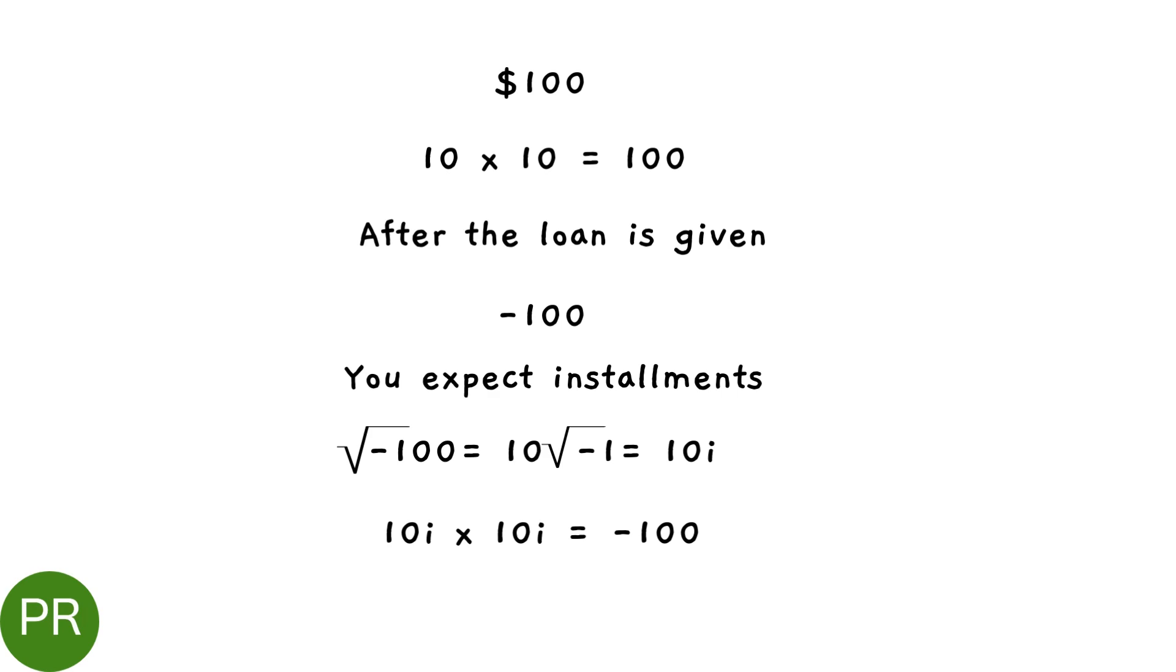So these are imaginary installments and imaginary weeks because they haven't happened. They may or may not happen. And but once you get them, then you get your minus $100 back. Now this analogy may give you some idea how to get the physical meaning out of imaginary numbers.